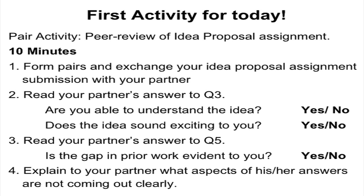The partner is to answer these two questions yes or no: Are you able to understand the idea which the other person has written in their proposal? And second, does the idea sound exciting to you? Once you have completed step 2, move on to reading the answer to question 5 and see whether the gap your partner has brought out is clear and making sense. Once again do a yes or no, and only after that start talking. Keep in mind you do not want to discuss anything with your partner while doing steps 2 and 3. Once you have finished and got your answers, start discussing where you explain to your partner what aspects of the answers are not coming out clearly.